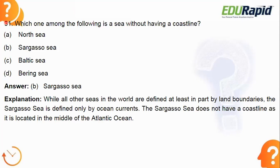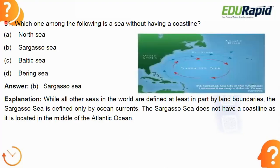The North Sea, Baltic Sea, and Bering Sea all have a coastline, but the Sargasso Sea has no coastline — it is an ocean gyre surrounded by four different ocean currents in the Atlantic Ocean. Please concentrate on this picture: in the middle of the Atlantic, that region is the Sargasso Sea, covered by four ocean currents.